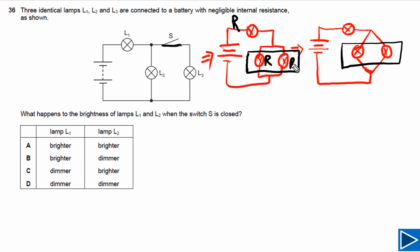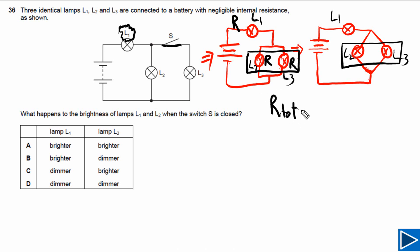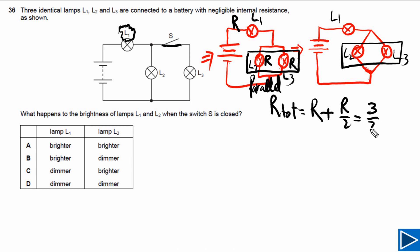The resistance of each lamp is R. As you can see in the question, the first lamp is L1, this is L2, and this lamp is L3. Now let's try to calculate the total resistance of the circuit. R total is equal to the resistance of L1 plus the total resistance of L2 and L3 in parallel. Since these two lamps are connected in parallel, their combined resistance is R divided by 2. So the total resistance is equal to 3R/2.